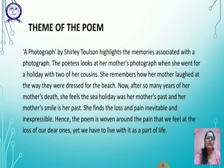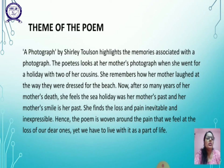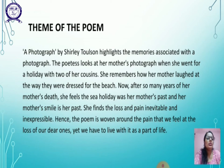Now let's begin with the theme of the poem. 'A Photograph' written by Charlotte Tolson highlights the memories associated with the photograph. The poetess looks at her mother's photograph when she went for a holiday with two of her cousins. She remembers how her mother laughed at the way they were dressed for the beach. After so many years of her mother's death, she feels the sea holiday was her mother's past and her mother's smile is her past. She finds the loss and pain inevitable and inexpressible.